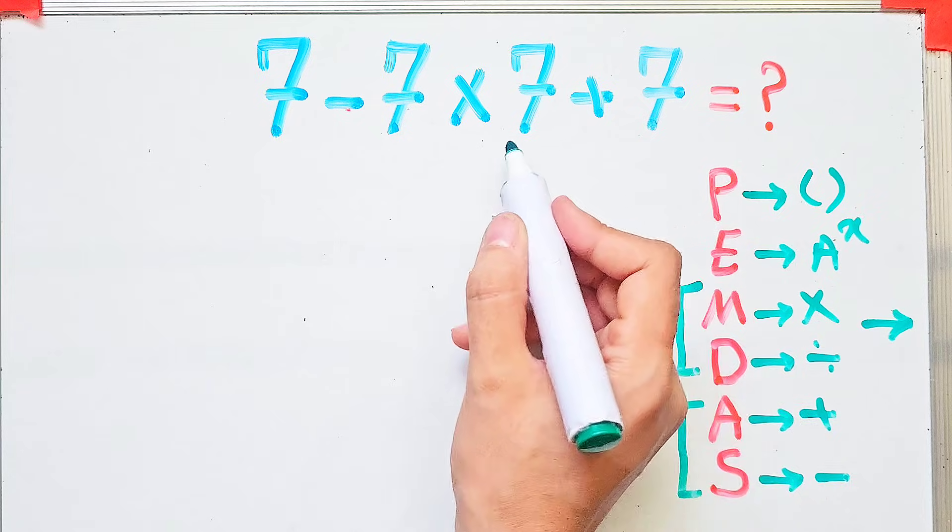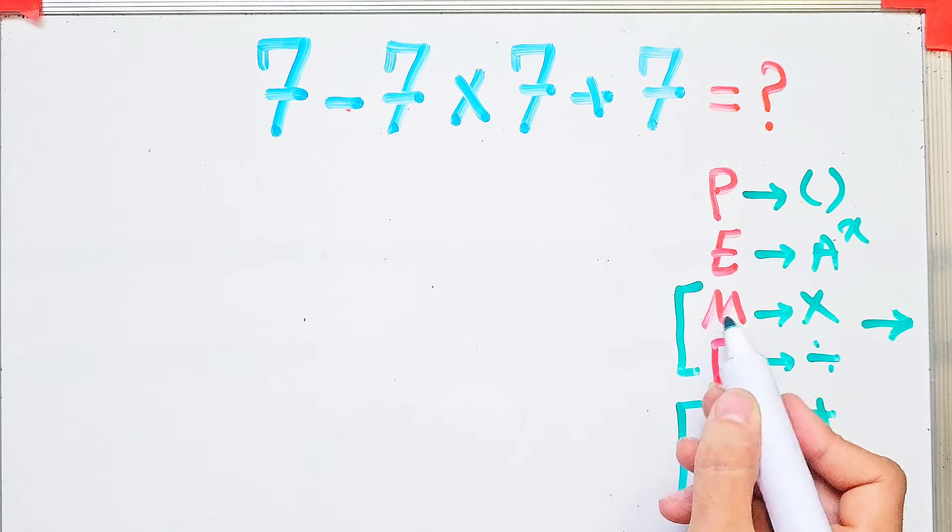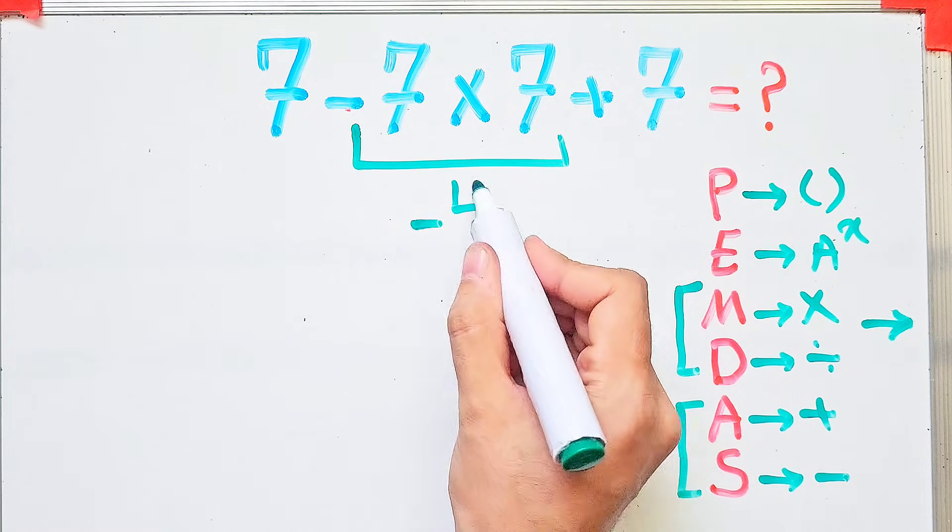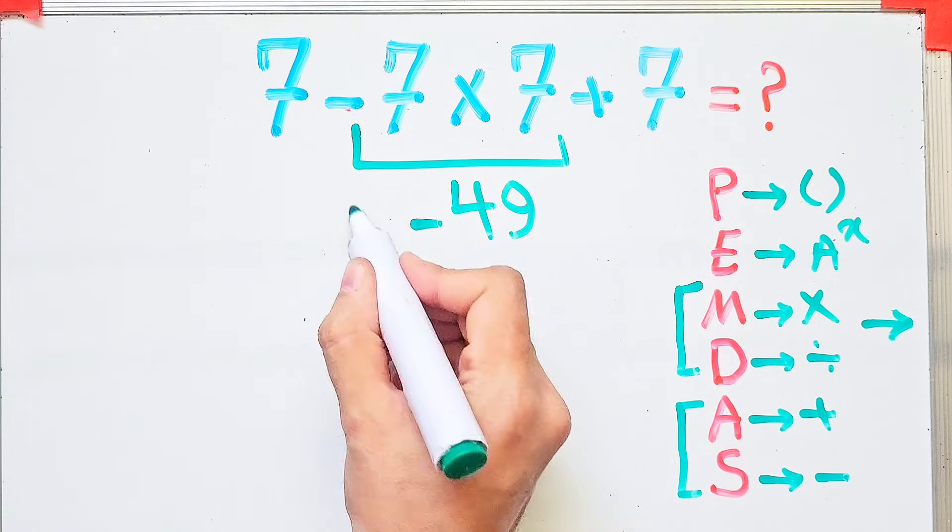In this question, first we simplify the multiplication. Negative seven times seven equals negative 49. Now we have seven minus 49, then plus seven.